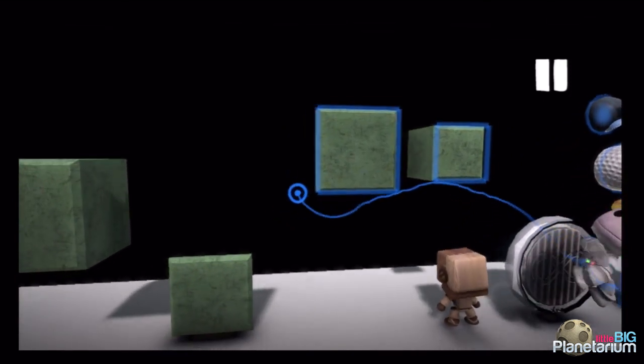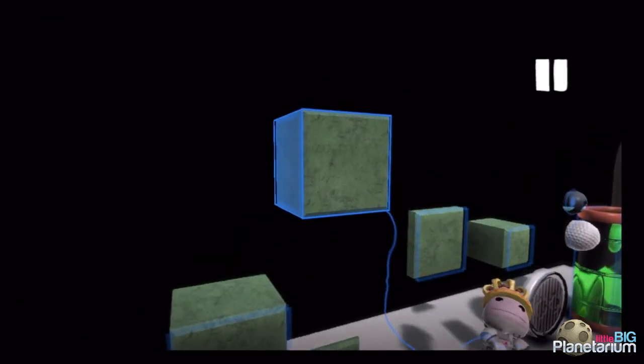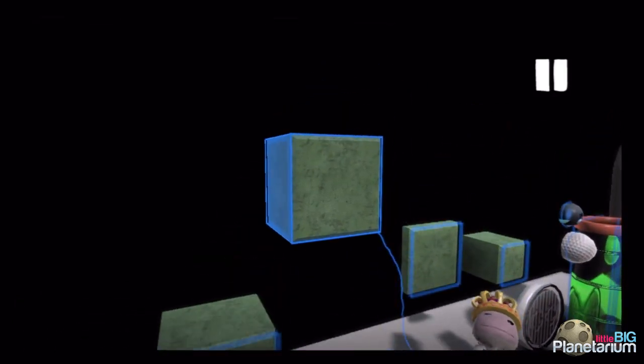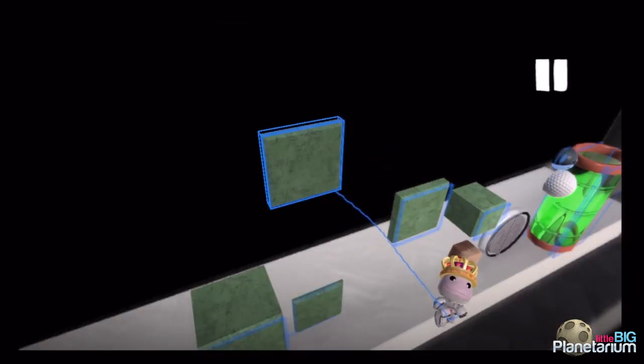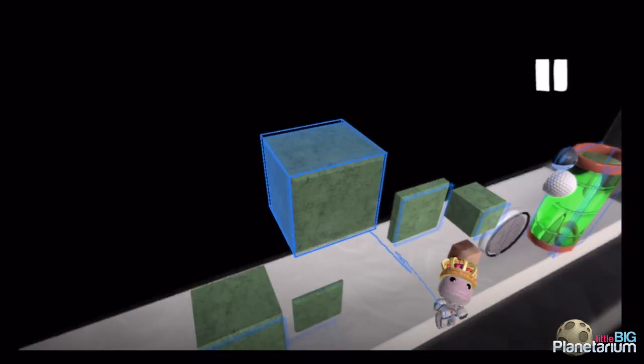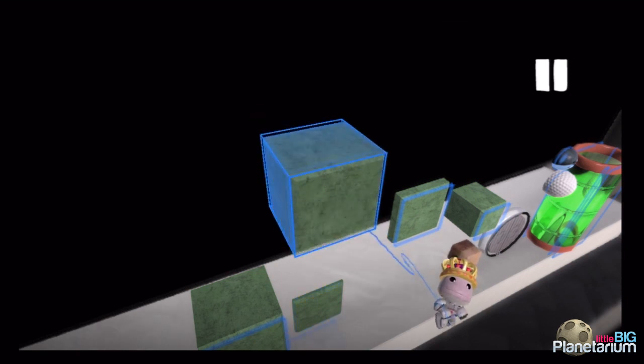But basically the way that these were made is in LBP1 you would start with a thick piece of material. You'd make a copy of it. And then if you look in LBP1, when you change the thickness of a material it actually has an animation. So for a few frames it's actually in between thick and thin.